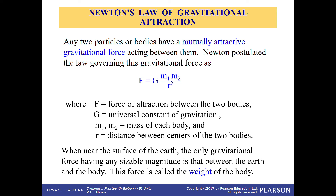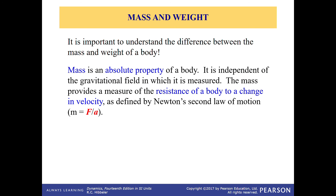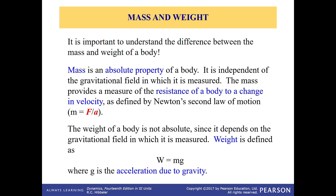When near the surface of the Earth, the only gravitational force having any sizable magnitude is that between the Earth and the body — we call this force the weight of the body. It is important to understand the difference between mass and weight. Mass is an absolute property of a body, independent of the gravitational field in which it is measured. Mass provides a measure of the resistance of a body to a change in velocity, as defined by Newton's second law, F = MA, so M = F / A. The weight of the body is not absolute since it depends on the gravitational field in which it is measured.